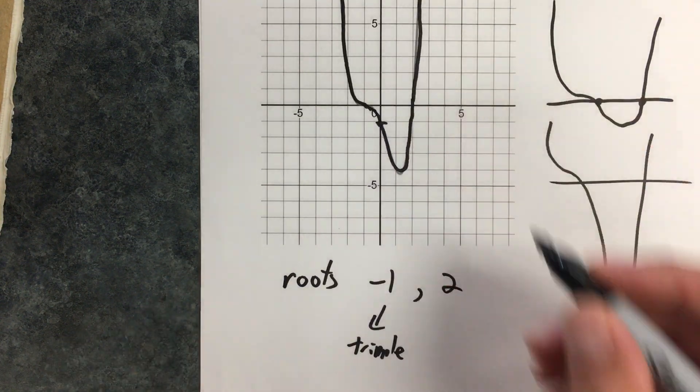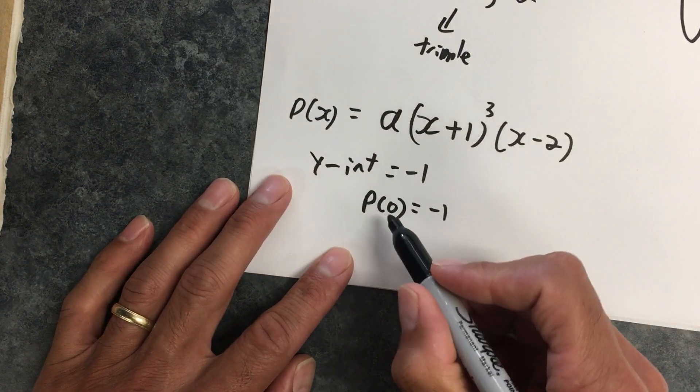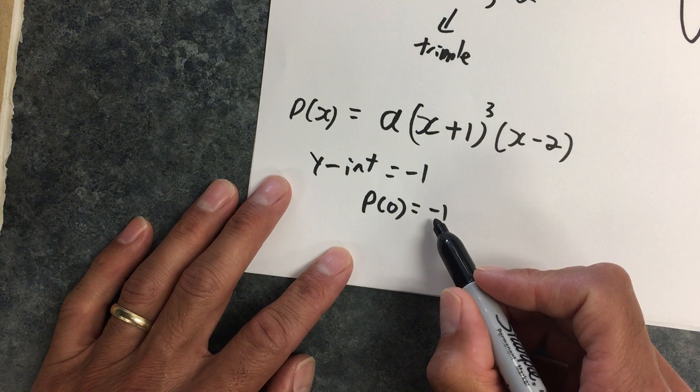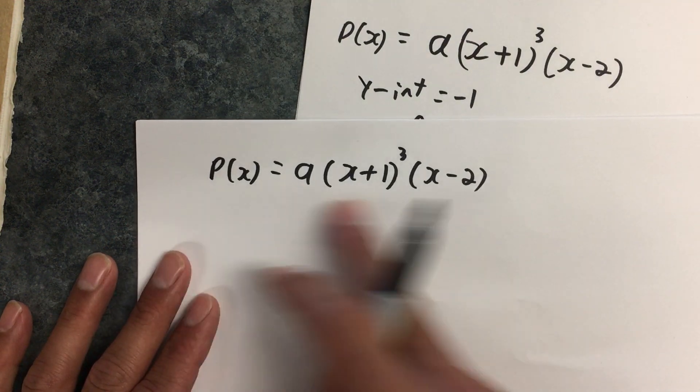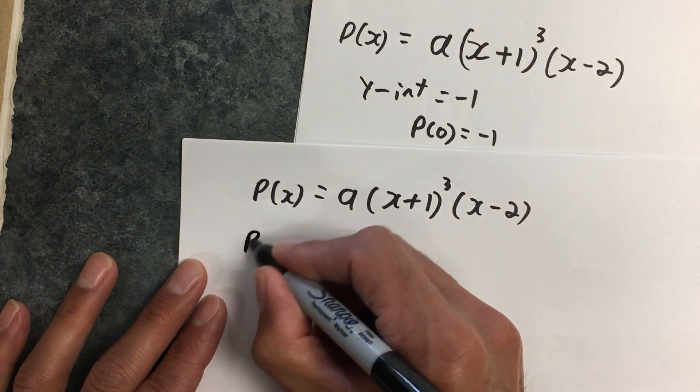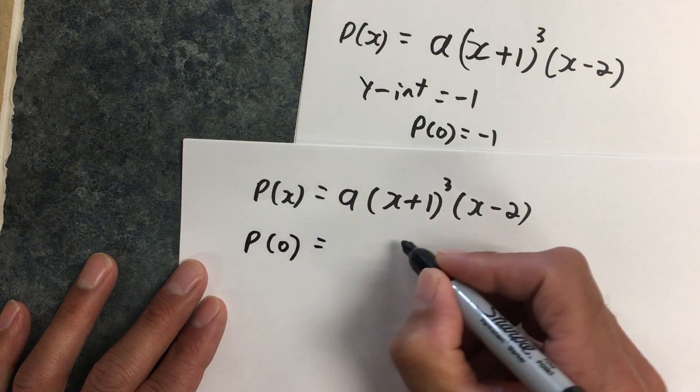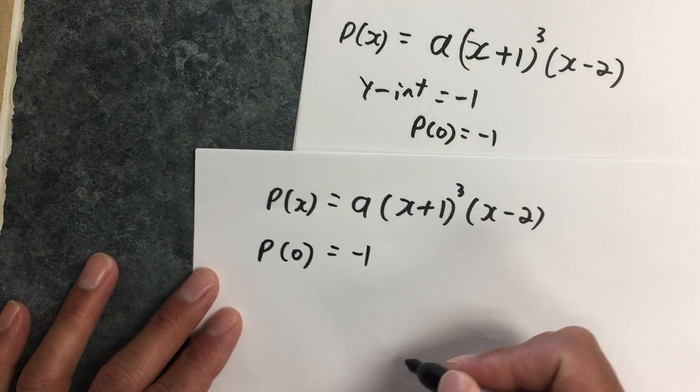Okay, the other thing I know from my y-intercept is that if x is 0, my y value is negative 1. So here's how I incorporate that information into my equation. I say if x is 0, the whole thing is negative 1.